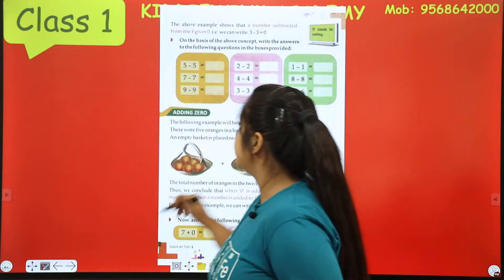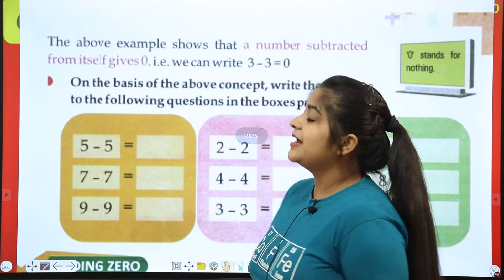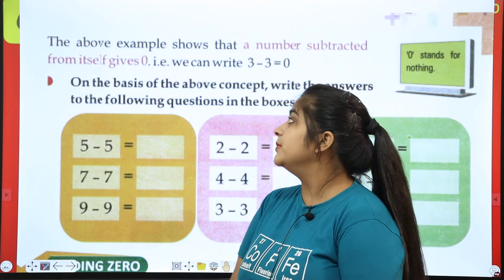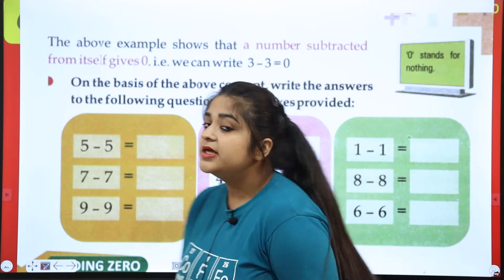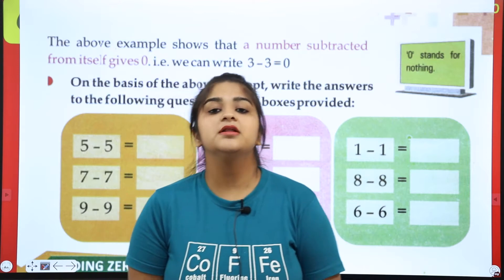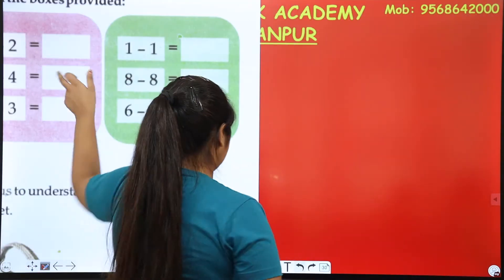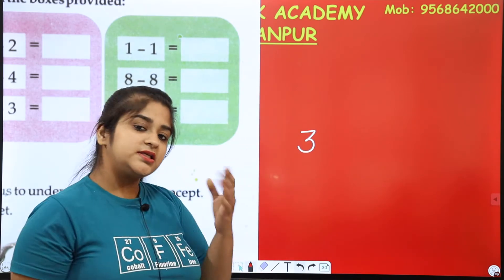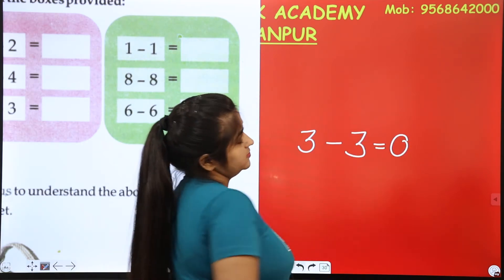Now we'll come to the next page. The above example shows that a number subtracted from itself will give the answer zero. We can say that whatever number is minused by itself, the answer is zero. For example, how many frogs were there? Three. Three minused by itself — what will it be? Zero.